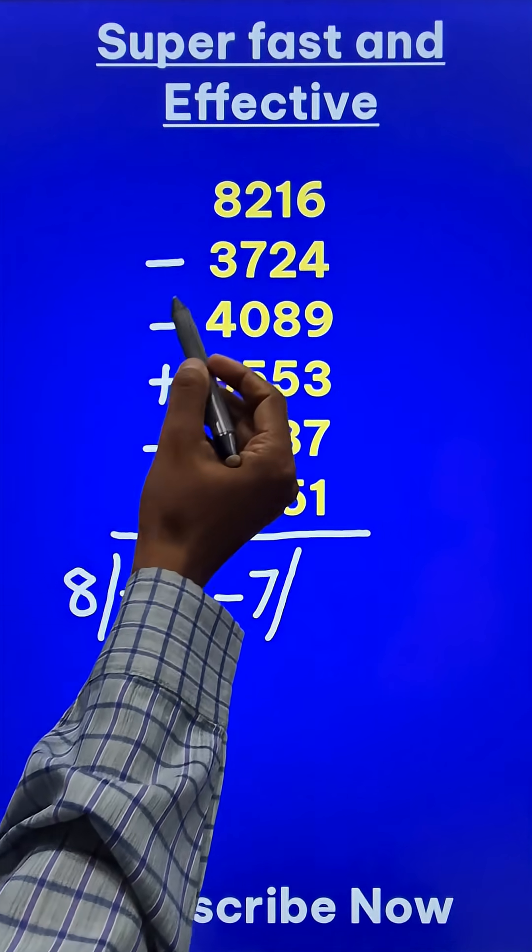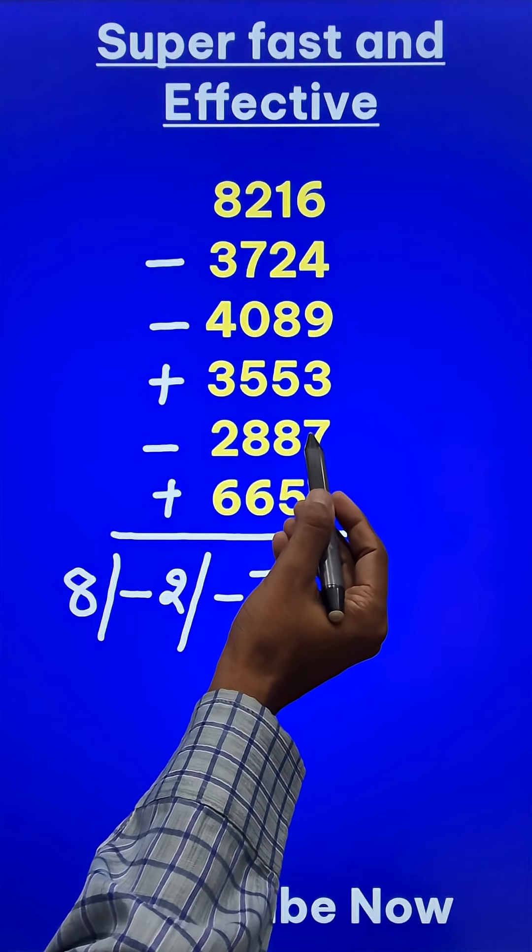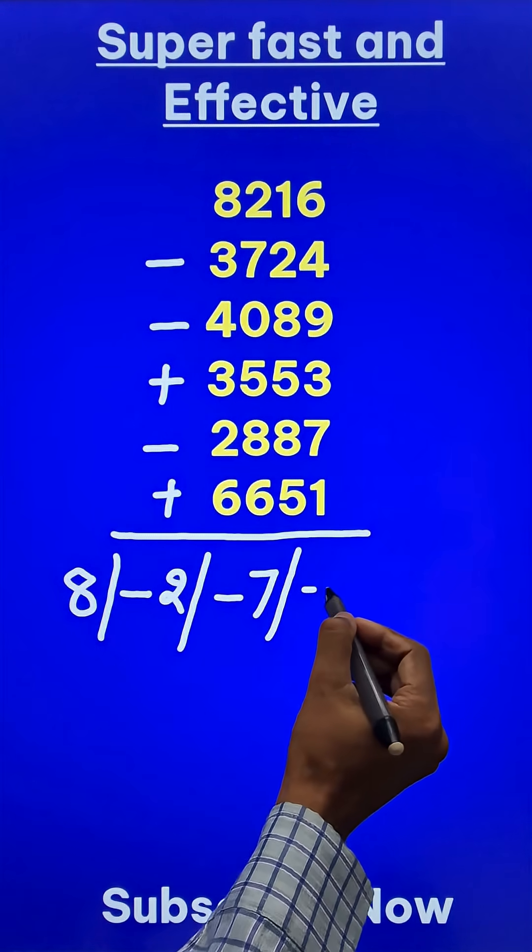And the final digit, 6 minus 4 is 2, 2 minus 9 minus 7 and then minus 7 plus 3 is minus 4, minus 4 minus 7 is minus 11 plus 1 is minus 10.